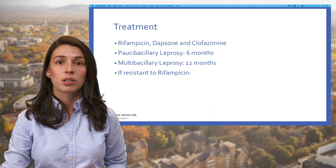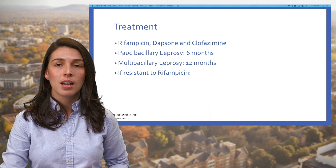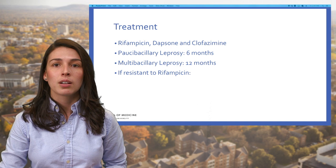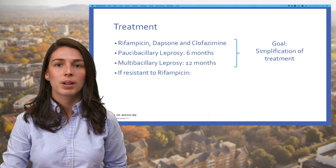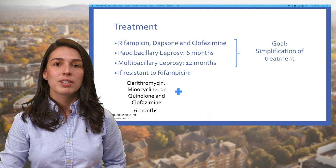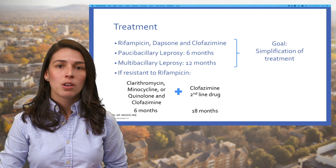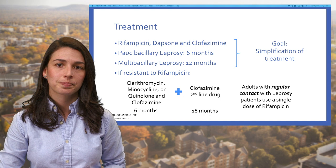Treatment uses a three-drug regimen comprising rifampicin, dapsone, and clofazimine. It is recommended for all leprosy patients, with a treatment duration of six months for paucibacillary leprosy and 12 months for multibacillary leprosy. The advantage of using the same three drugs for both forms is simplification of treatment. For patients resistant to rifampicin, two of the following drugs are recommended: clarithromycin, minocycline, or a fluoroquinolone, plus clofazimine daily for six months, followed by clofazimine plus one second-line drug daily for an additional 18 months. For adults and children aged two and above in regular contact with leprosy patients, guidelines recommend a single dose of rifampicin.